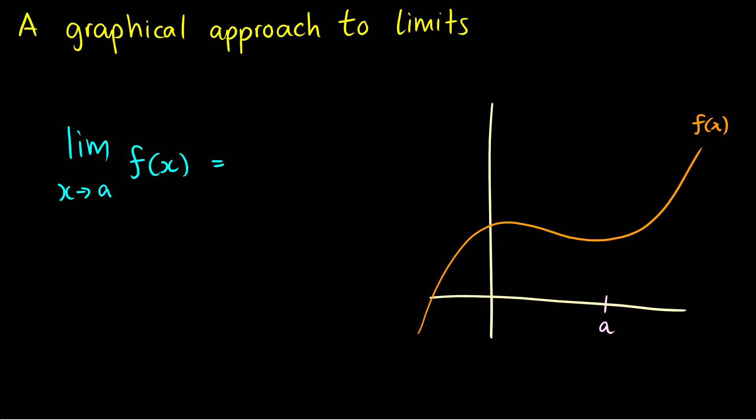We're going to take a graphical approach to limits in order to discuss discontinuities and jumps in graphs. For the first example, I have a nice continuous curve — there's no missing pieces, no weird jumps — and we can evaluate the limit of these continuous curves easily. The limit as x approaches a of f(x) is just equal to f(a). Whether x approaches from the left or the right, f(x) gets closer to f(a), and that's a really nice condition when it's continuous.